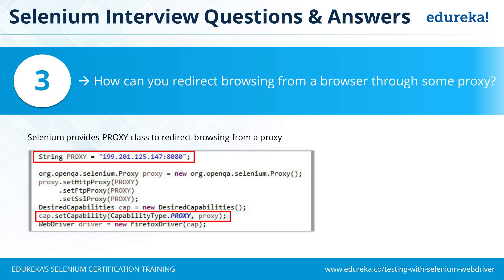The next question is: how can you redirect browsing from a browser through a proxy? Yes, it is possible using Selenium WebDriver. Selenium has a Proxy class to redirect browsing through a proxy. You declare a string for the proxy specifying the hostname or IP address — for example, 199.201.125.147 — and the port, such as 8080. Then using the org.openqa.selenium.Proxy class, you create a proxy object and set the HTTP proxy, FTP proxy, and SSL proxy using proxy.setHttpProxy, etc.